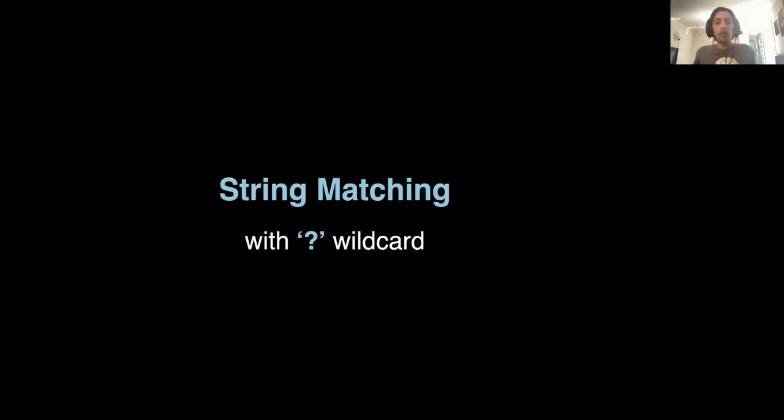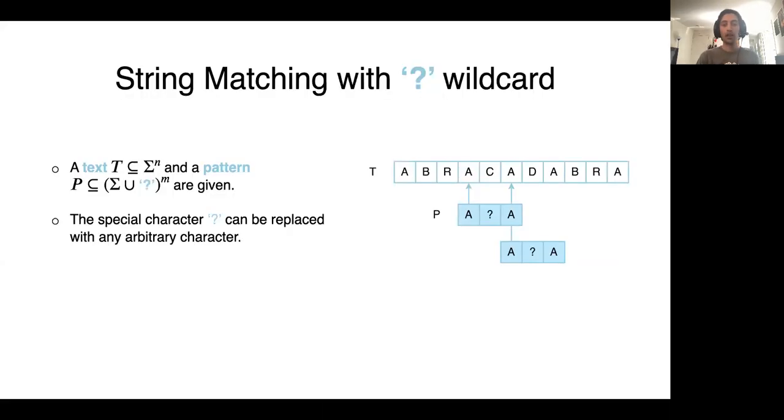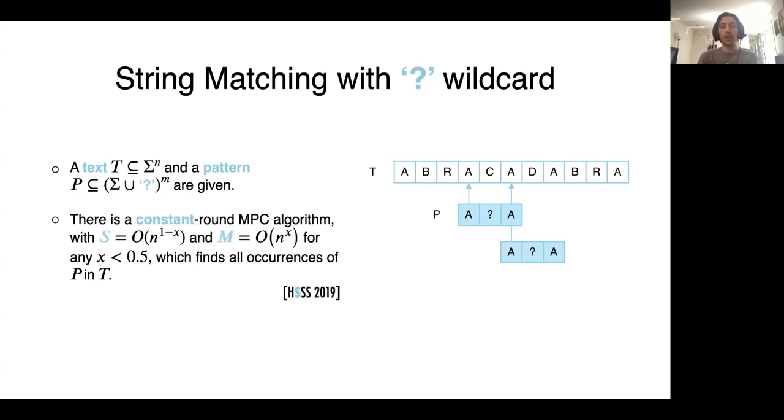Okay, now for the case that we have a question mark character. The question mark character in pattern can be matched with any arbitrary character in text. For example, for the string P here which is question mark followed by A, there are two matches in T. In the first one, question mark is replaced by C, and in the second one is replaced by D.